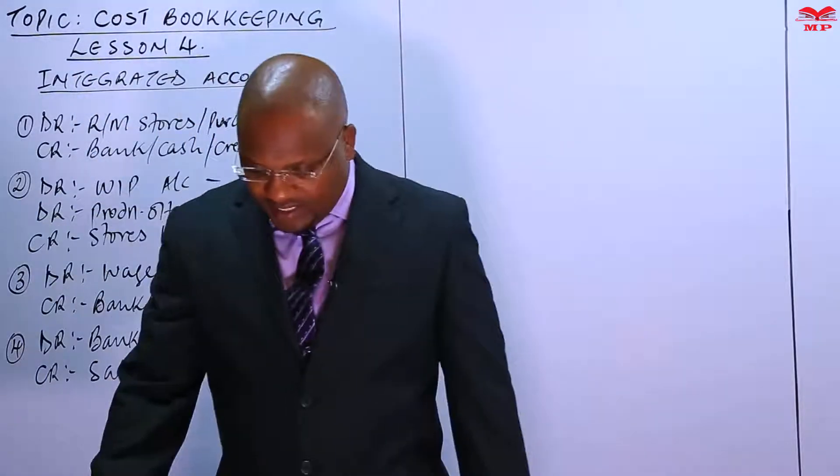Let's have a situation: Bora Limited commenced its operations on 1st of March 2005 with a fully paid-up issued share capital of shillings 500,000, represented by fixed assets of shillings 275,000 and cash at bank of shillings 225,000. The company has two departments, A and B. As at May 2005, the following transactions had taken place. One: credit purchases from suppliers amounted to shillings 573,500, of which 525,000 were in respect of raw materials and shillings 48,500 were in respect of purchases classified as production overhead items.